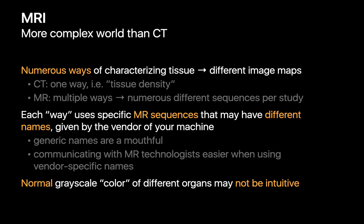So what's the TLDR? The world of MRI can seem more complex than the world of CT. You've got numerous ways of looking at tissues in the body with MRI instead of just one with CT — sort of like experiencing the world with multiple senses instead of only one. The catch is that the nomenclature can get gnarly, and the normal grayscale colors of different organs may not be as intuitive when you're first getting started reading MRI.